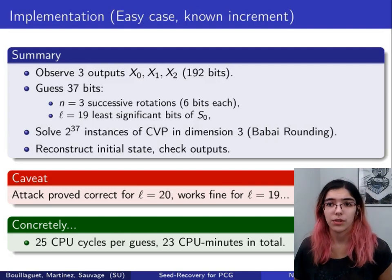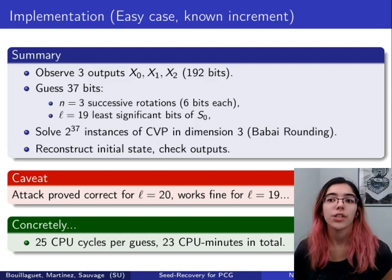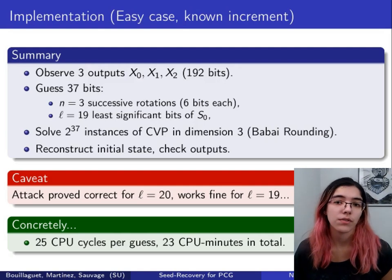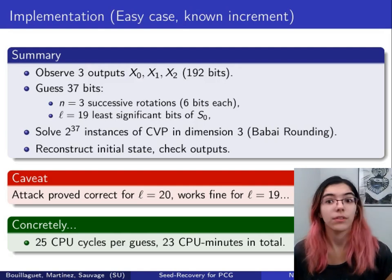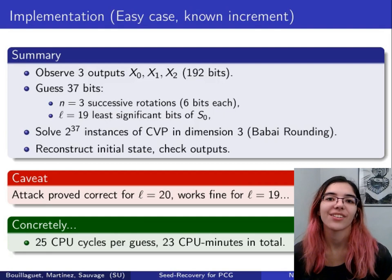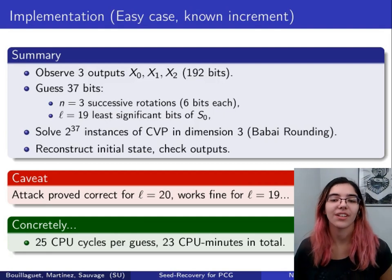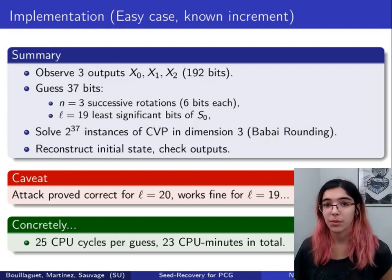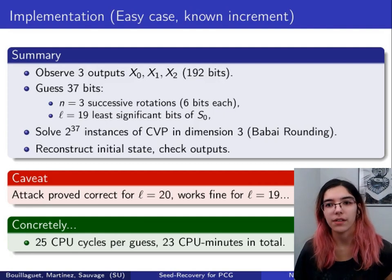We've put some effort into the implementation. Each trial only requires 25 CPU cycles. So the whole procedure runs in 23 CPU minutes. That was for the easy case.